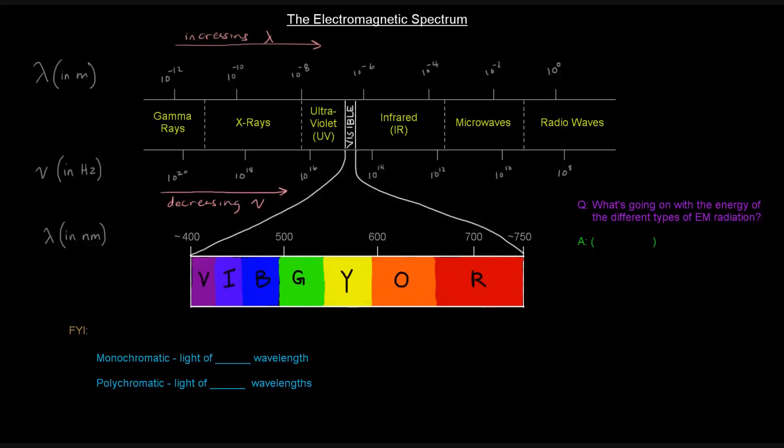We know them as ROYGBIV, but since I've written it here from lowest wavelength to highest wavelength, it's VIBGYOR. Anyway, the point is, so it's backwards here, but you probably learned that the colors of the rainbow are ROYGBIV, red, orange, yellow, green, blue, indigo, violet. So near the 400 nanometer end, we've got violet light, and we've got up to the 700, 750 is where the red is. So red light has a longer wavelength, and thus a shorter frequency.